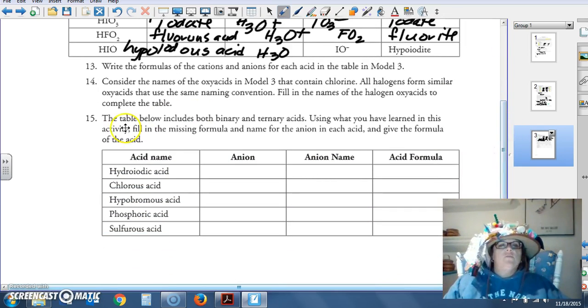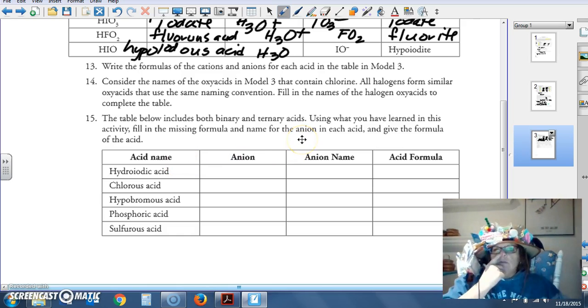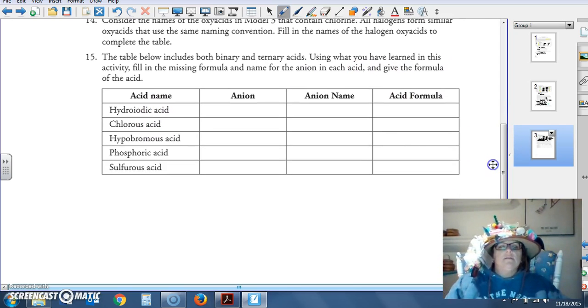All halogens form similar oxygens. We've pretty much already talked about that. The table below includes both binary and ternary acids. Include what you've learned in this activity, fill in the missing formula and name for each acid, giving the formula of the acid.